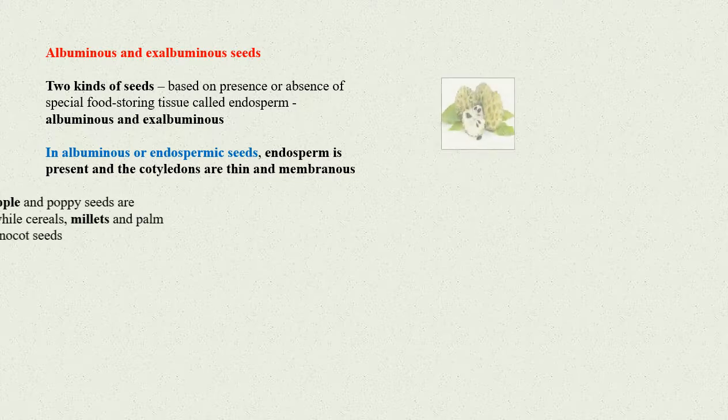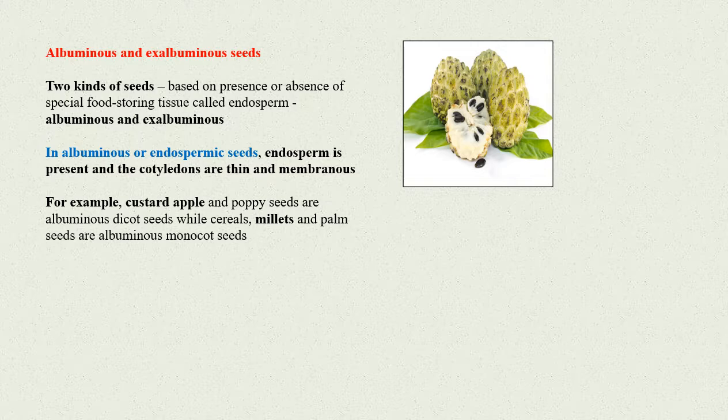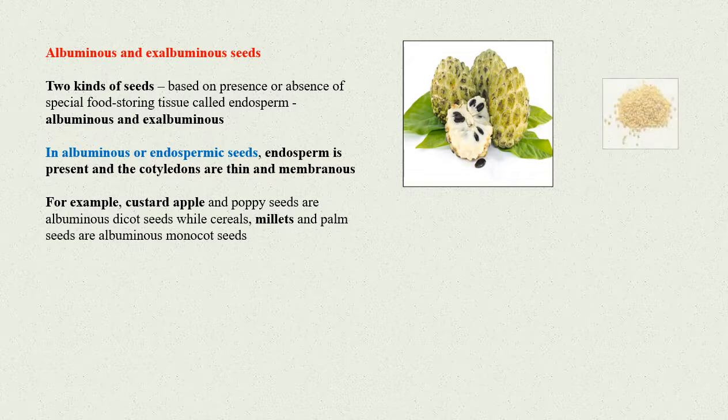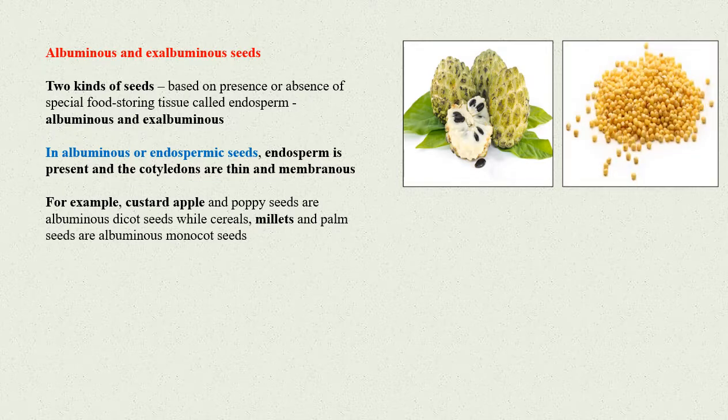For example, custard apple and poppy seeds are albuminous dicot seeds, while cereals, millets, and palm seeds are albuminous monocot seeds.